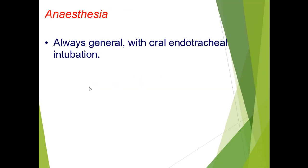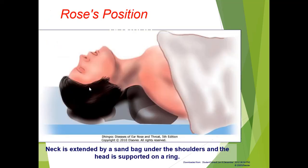Anesthesia is always general anesthesia with oral endotracheal tube intubation. The position during surgery is the Rose position, meaning the neck is extended with a sandbag under the shoulders and the head is supported on a ring.